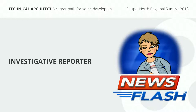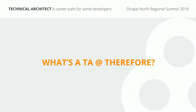So let's move on to the heart of the matter. What's a TA at Therefore? In very short, a TA at Therefore is a developer who is responsible for leading a development team. That means the TA is responsible for the technical approach, but also all the human side of the team. They bring a unique blend of management skills and leadership skills within the technical context of the development team.